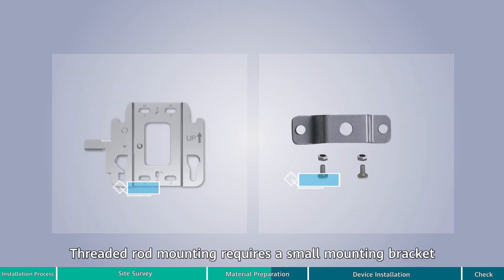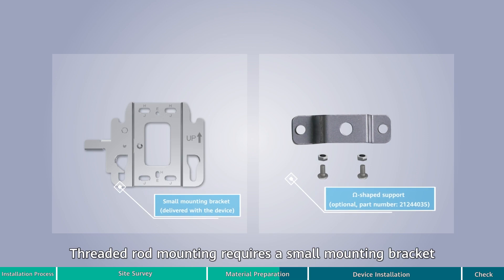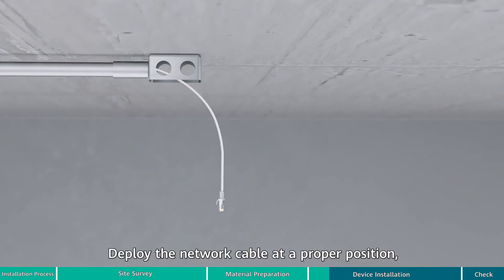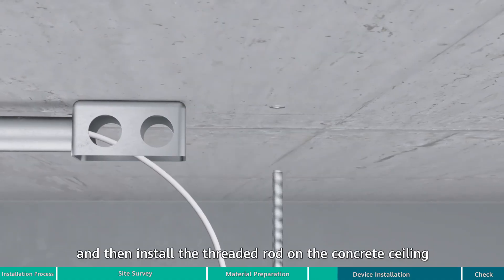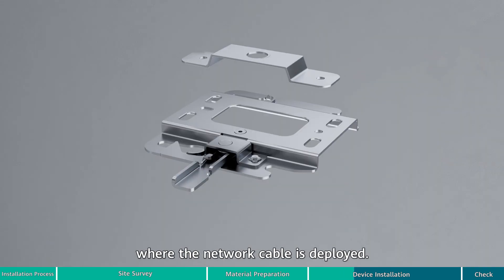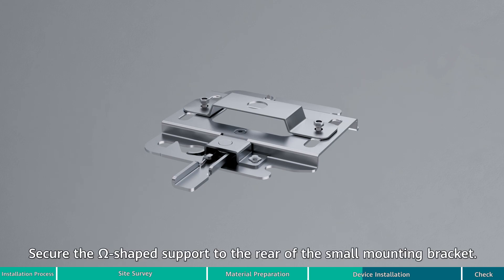Threaded rod mounting requires a small mounting bracket and omega-shaped support. Deploy the network cable at a proper position and then install the threaded rod on the concrete ceiling where the network cable is deployed.